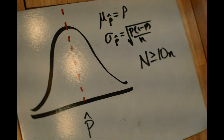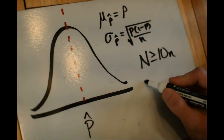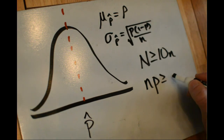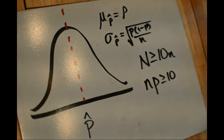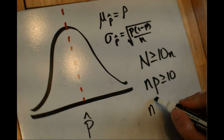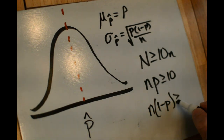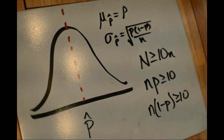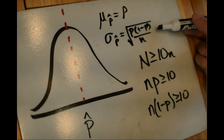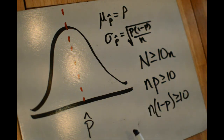Rule of thumb number two states that we can use the normal approximation — a normal curve — if we know that n times p is greater than or equal to 10, in other words that we have at least 10 successes, and that n times 1 minus p is also greater than or equal to 10, meaning we have at least 10 failures. As long as these conditions are satisfied, we can safely use this formula for standard deviation and use the normal distribution to make calculations.